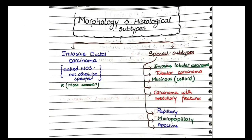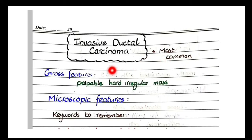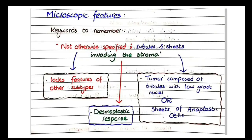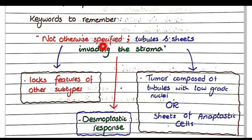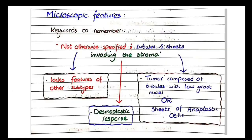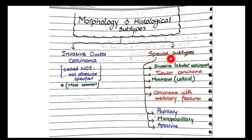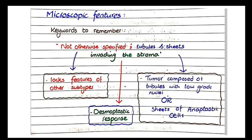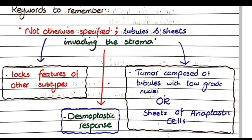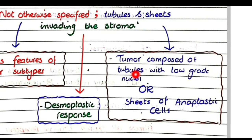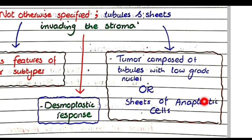Invasive ductal carcinoma is the most common type. Grossly it presents as a palpable hard irregular mass. For microscopic features, the keywords to remember are: not otherwise specified, tubules and sheets invading the stroma. Not otherwise specified again means that they lack features of the other subtypes. Secondly, there will be tubules and sheets.